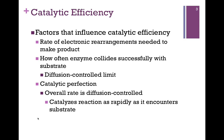What are the factors that might influence catalytic efficiency? Some of it is just the rate of the electronic rearrangements needed to make the product — in other words, just the chemistry involved. But there's also a factor of how often the enzyme collides successfully with its substrate, meaning proximity and orientation features. This is called the diffusion-controlled limit. The cell has a certain dimension and certain components present, so there's a limit to how often the enzyme will actually meet its substrate, regardless of substrate concentration.